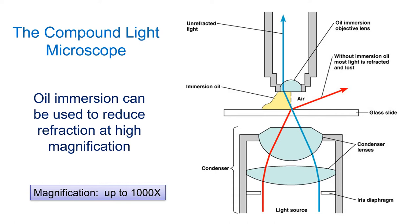When using a high-power objective — the 100x objective, for instance — we use a droplet of immersion oil between the glass slide and the objective lens to ensure we collect as much light as possible. Without immersion oil on the highest magnification objectives, we get a very dim image because we're losing a lot of light to refraction, and we also get poor resolution.